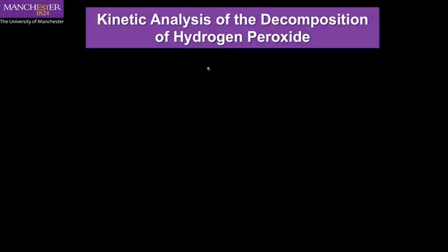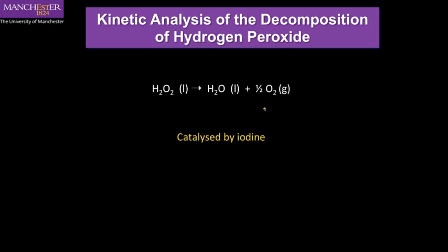We're now going to illustrate some of the things that we've been doing in our lectures through an experiment on the kinetic analysis of the decomposition of hydrogen peroxide. We're going to look at this reaction experimentally, where we take hydrogen peroxide and look at it decomposing into water and oxygen. This is catalyzed by iodine in a similar manner to some of the complex reactions we saw at the end of our last lecture.